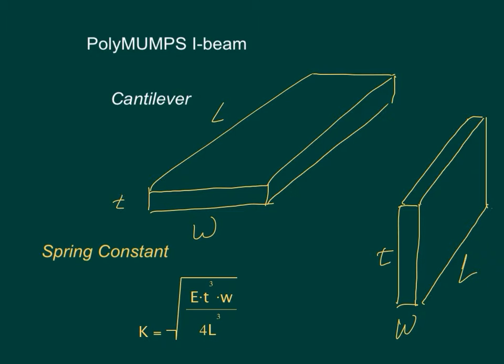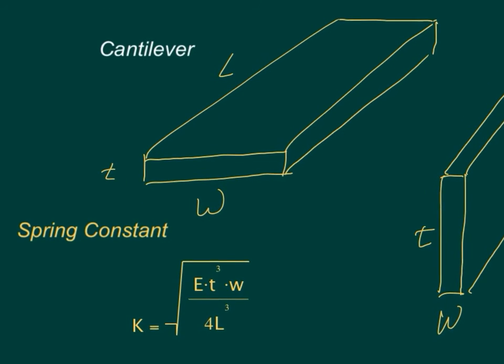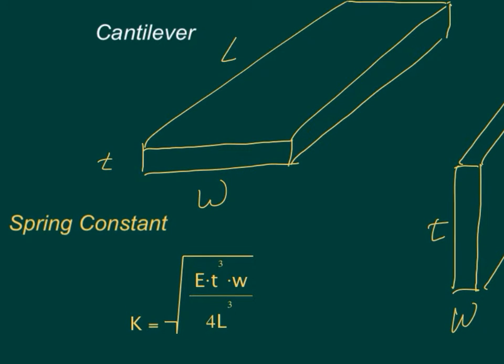But the one thing to understand about cantilevers is that there is a spring constant associated with it. So the spring constant K is a function of material property called bulk modulus times the thickness cubed times the width of the cantilever divided by 4L cubed, all underneath the square root sign.